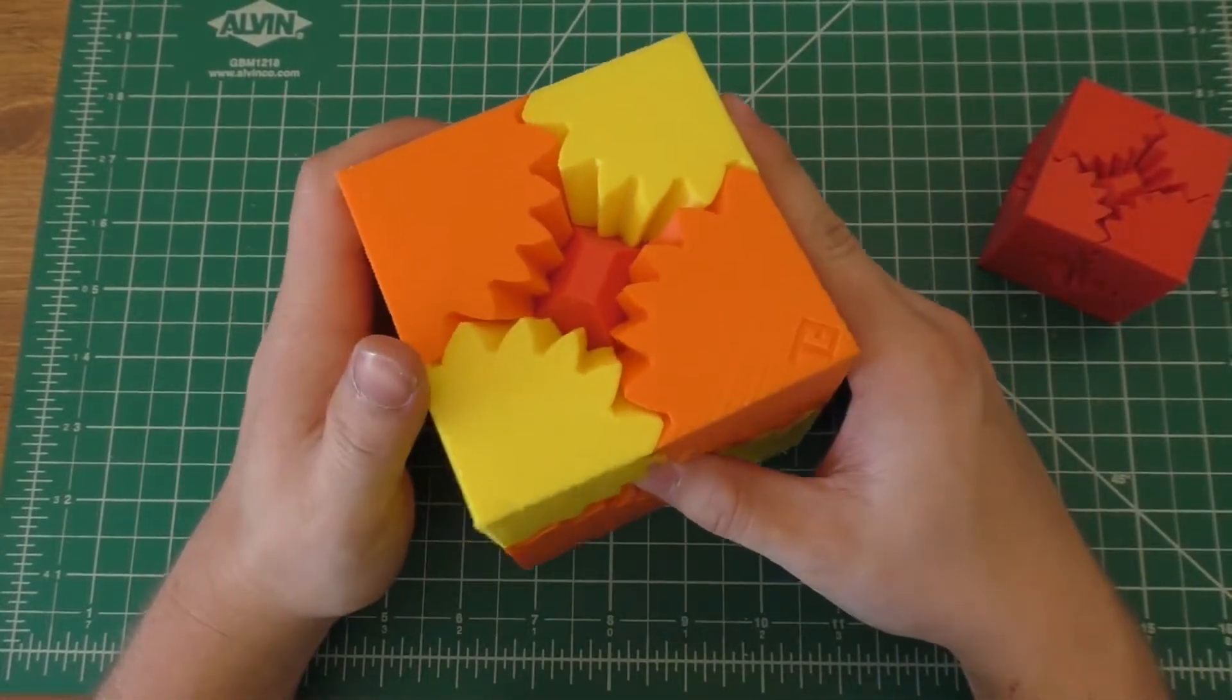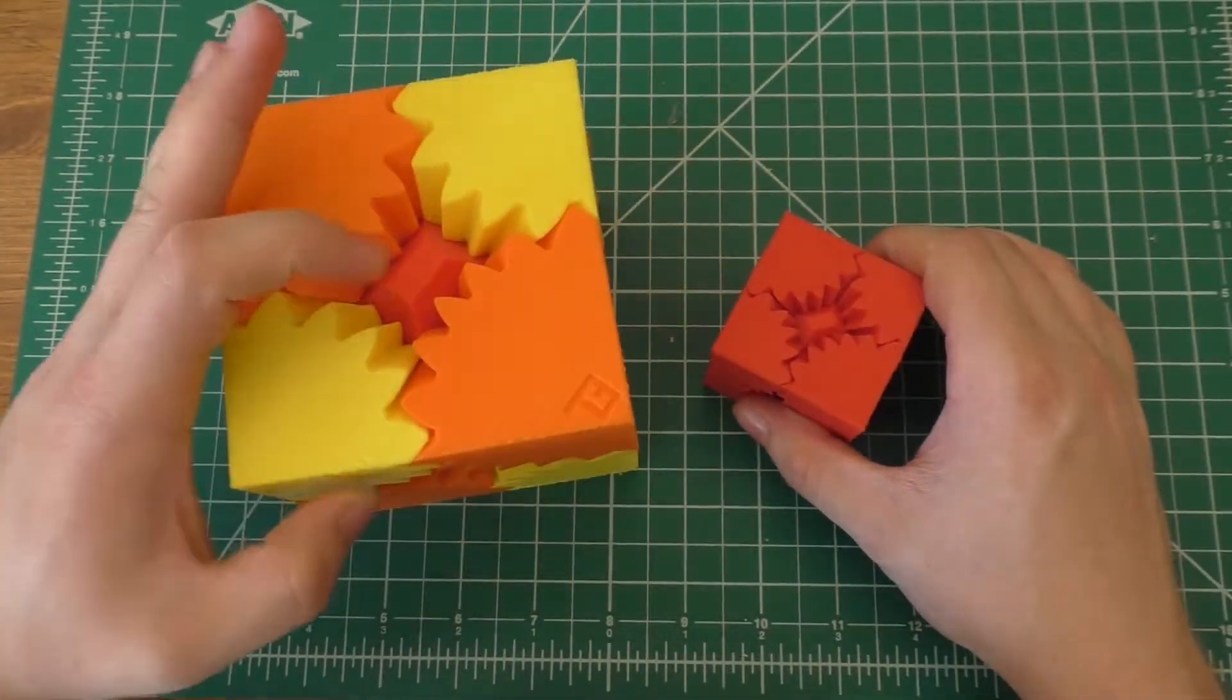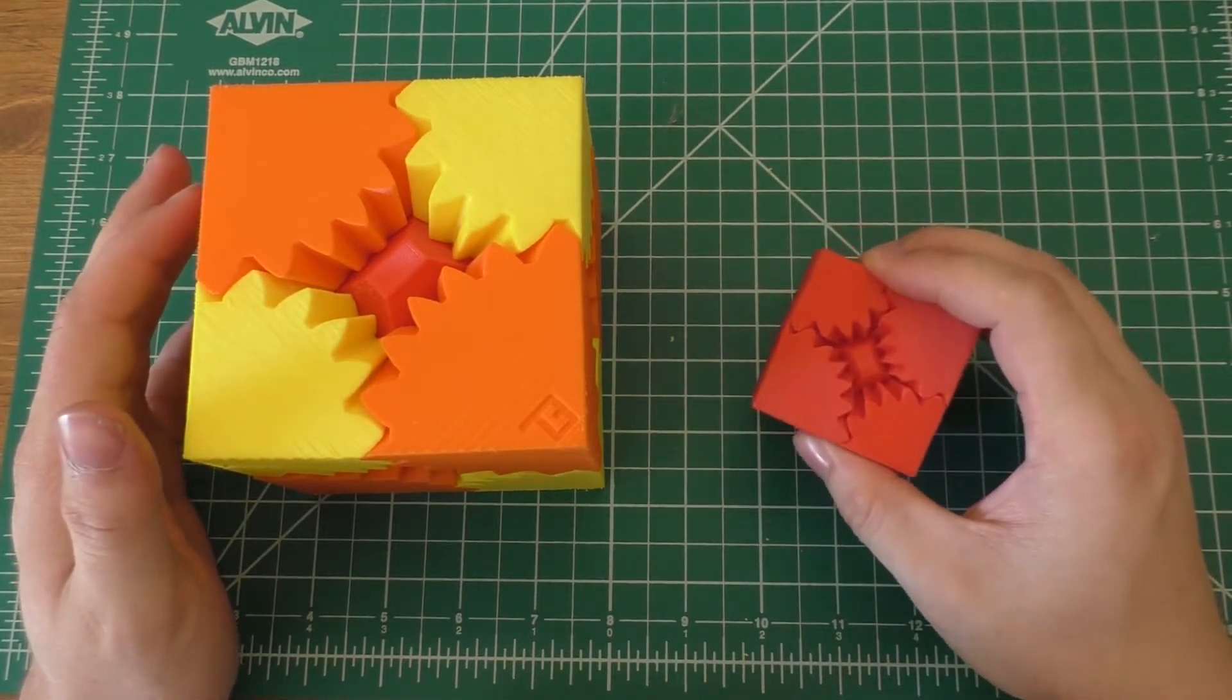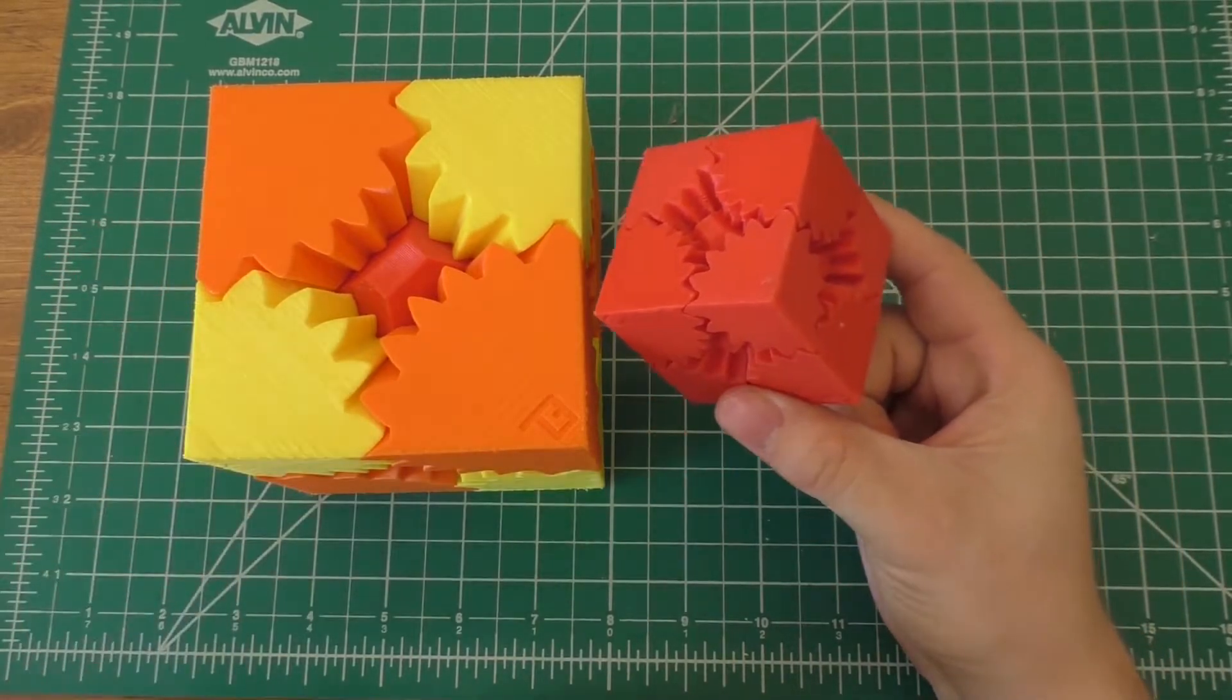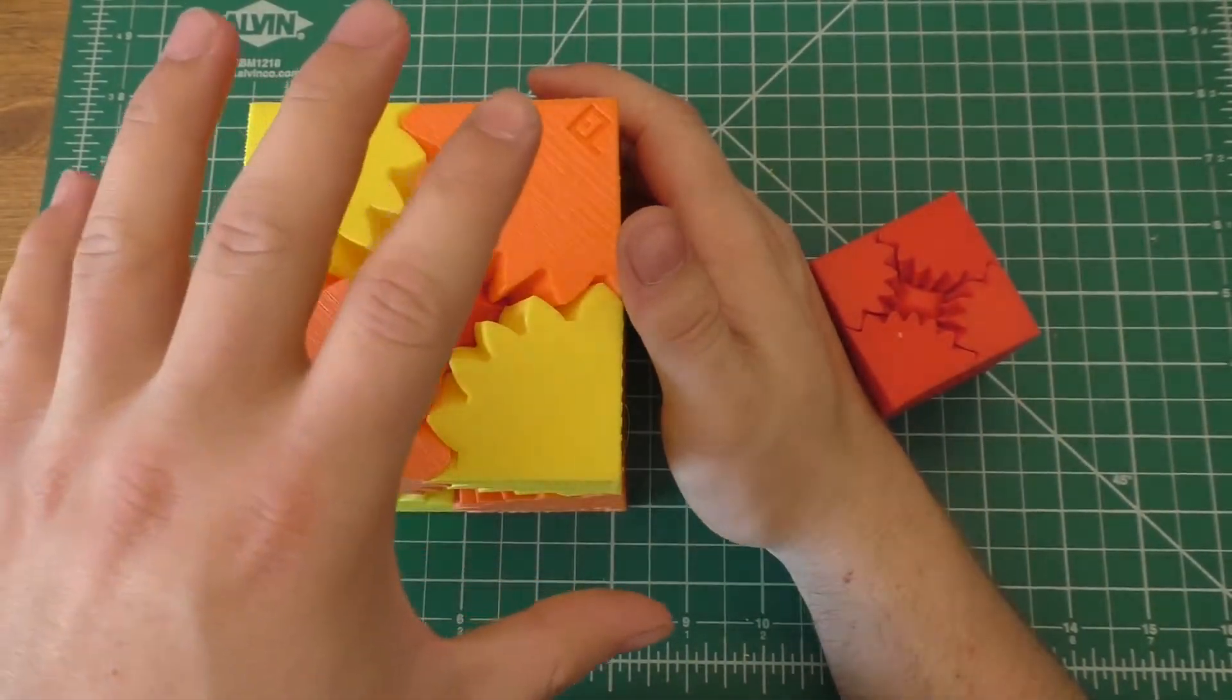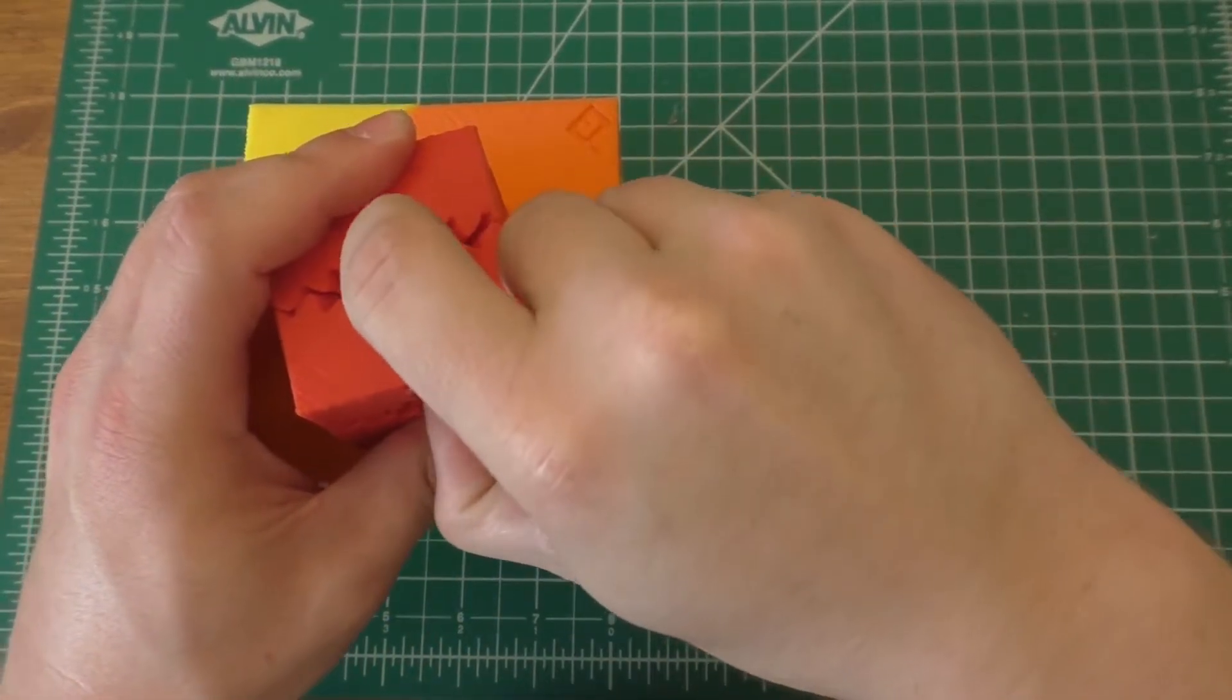So in order to actually print this, I had to go into the original STL file for this one and split all these pieces apart. Because it was just one STL file that had all the parts on it, this little cube pretty much took up my entire print bed. So in order to print this, I had to go ahead and take off all these, like the big gears here.